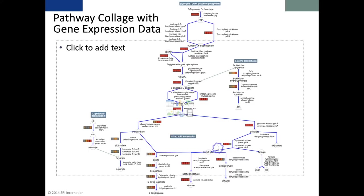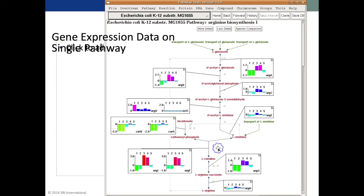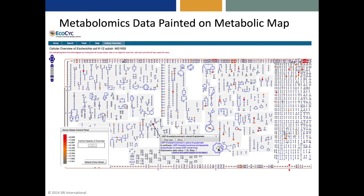Here's a pathway collage with gene expression data. Here's a pathway diagram with gene expression data. Here's metabolomics data painted onto the full metabolic map — for metabolomics data, the data is painted onto the nodes, the dots in the diagram, instead of the reaction edges.